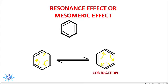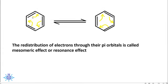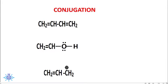Resonance is a sign of stability — the more the number of resonance structures, the more stable the compound is. Conjugation is a basic requirement for resonance. The redistribution of electrons through pi orbitals is called the mesomeric effect or resonance effect. This effect is found in unsaturated conjugated systems and it is a permanent effect.